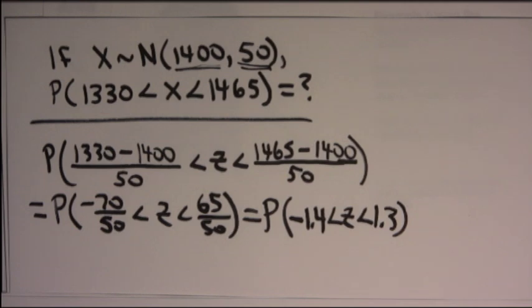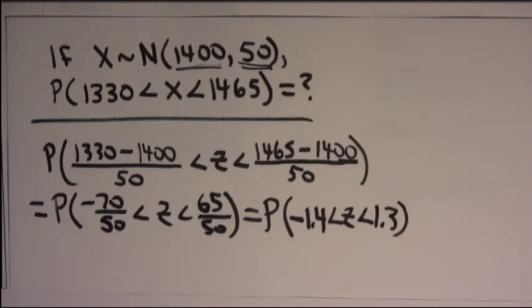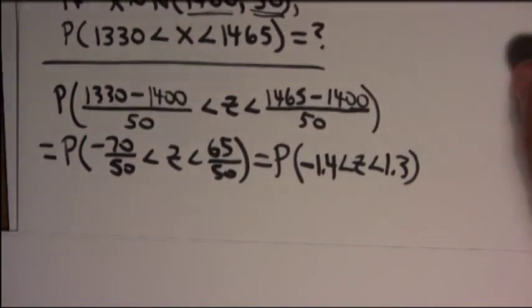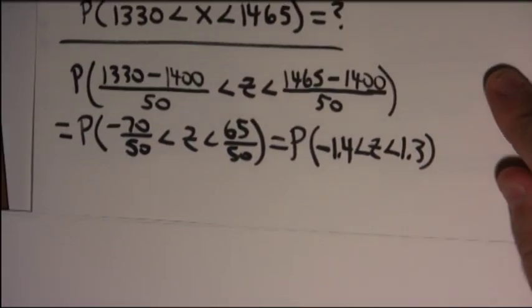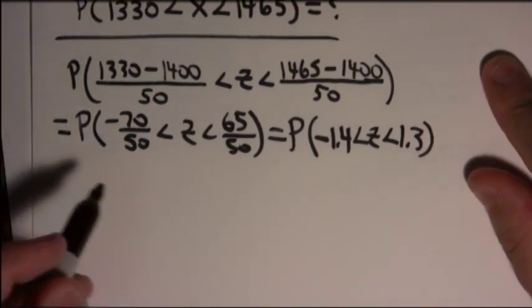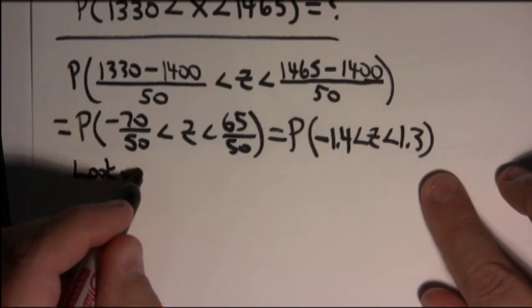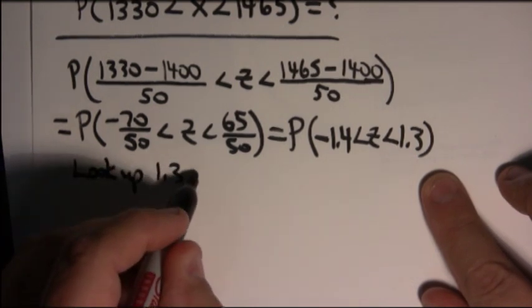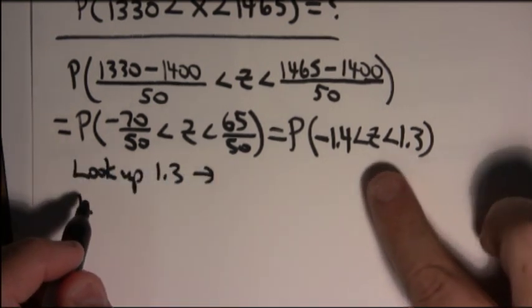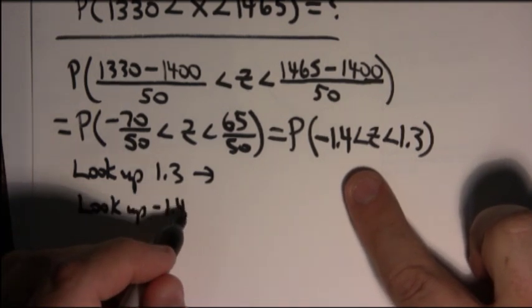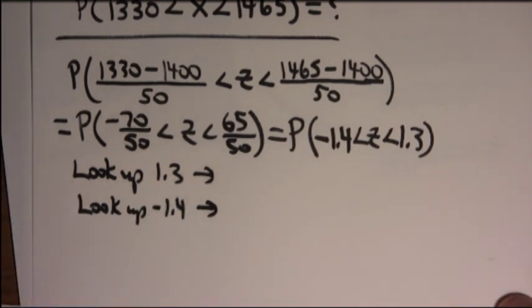Now, you're back to a z value, so you do it just as you did before. In other words, to continue once you get a z, all you have to do is look up the rightmost value. Look up the value on the right in the table, 1.3. And then look up the left value, which is negative 1.4 in the table. And then, you subtract the 2.